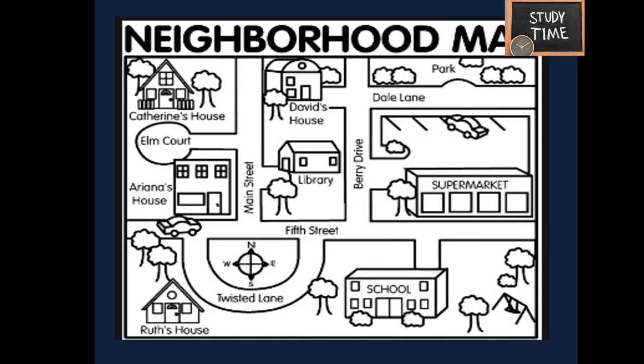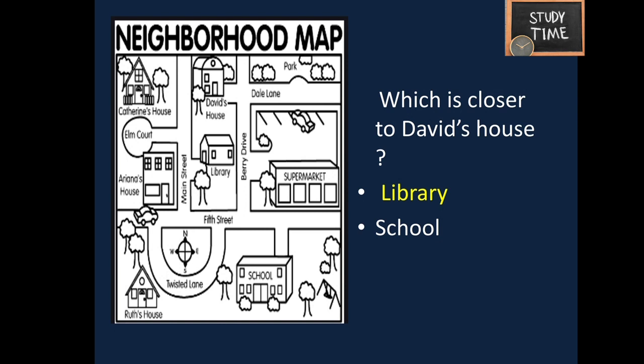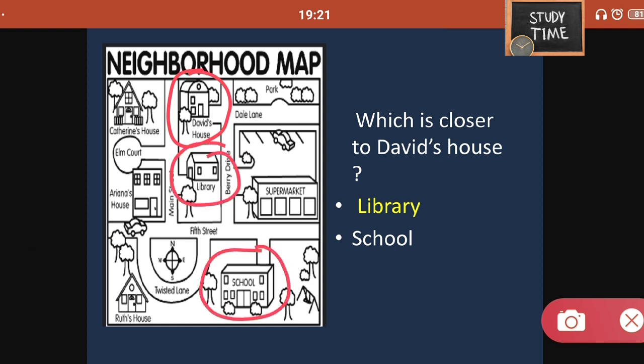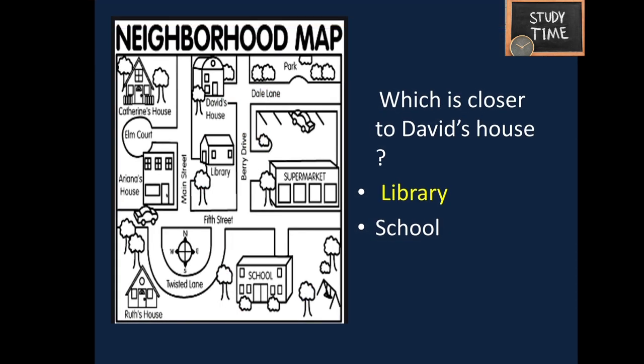Next, there is a map and a few questions are asked based on this map. Which is closer to David's house — either the library or the school? Here, this is David's house. Obviously the library is closer, so the answer is library.